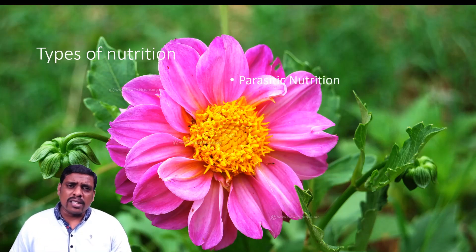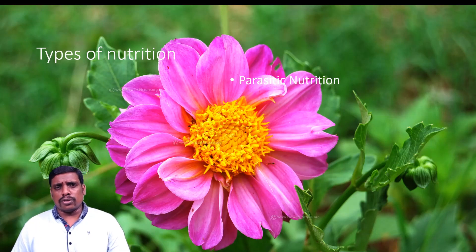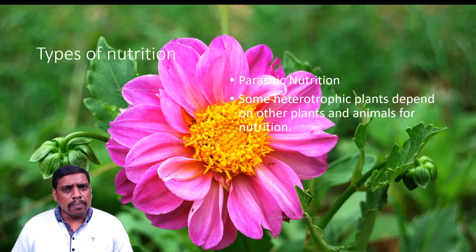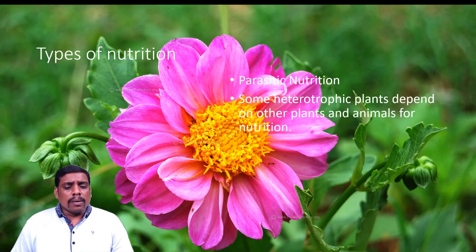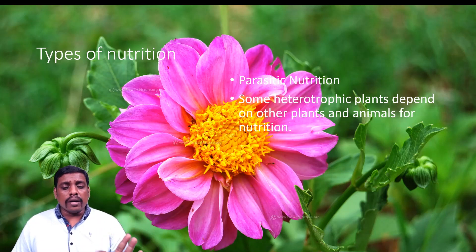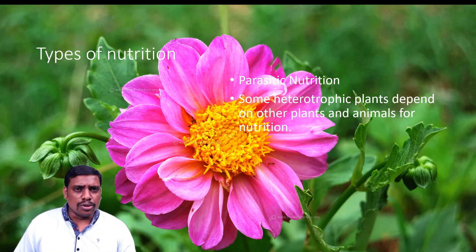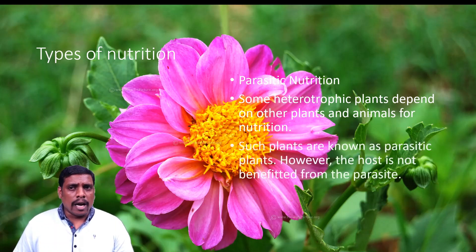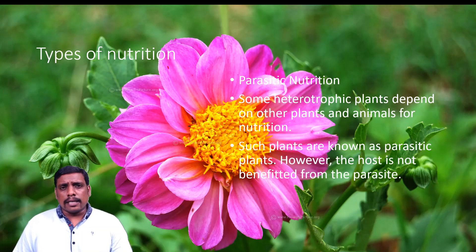Now, looking at parasitic nutrition in plants: parasitic nutrition is one of the harmful types of nutrition in organisms. Some heterotrophic plants depend on other plants and animals for nutrition. Such plants are known as parasitic plants.